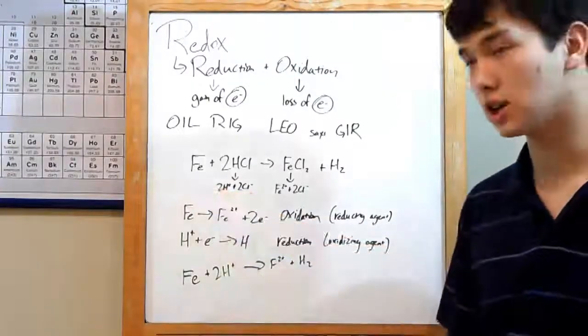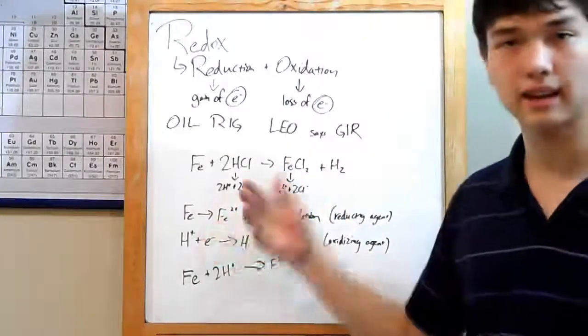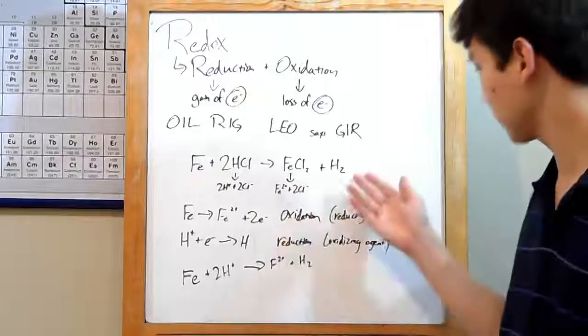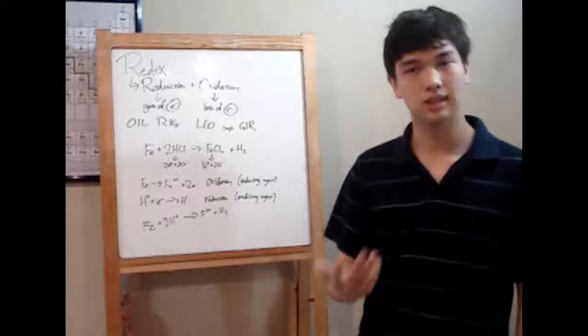What happened? Our Fe over here was uncharged, and over here something's got a 2 plus charge. Also back here, we had an H plus ion. It became regular H. What happened? That's redox. One of them gained electrons, the other one lost it.